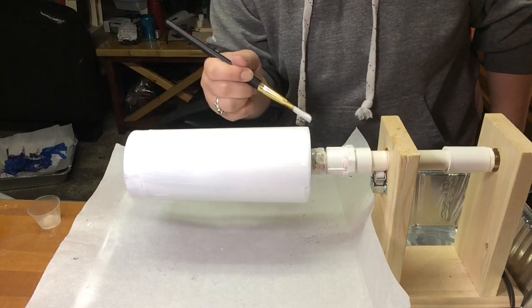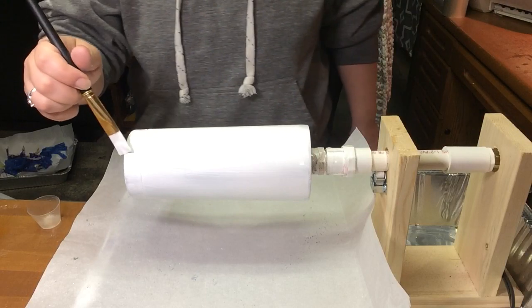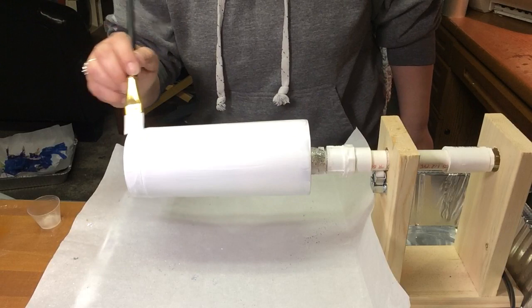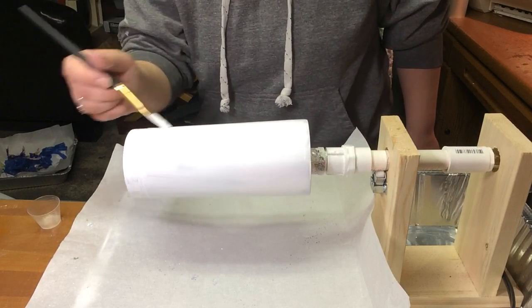Now once you get a nice good coat on here, you want to let this dry for a while and then put a second coat on. You want to make sure you don't see as much of that stainless steel through.